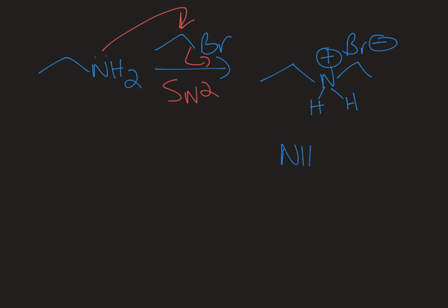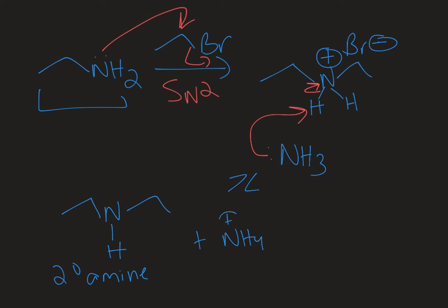Amines are good bases, so an ammonia that hasn't reacted yet, or maybe another equivalent of this ethylamine that's been generated, can come in and deprotonate the salt that I've made here, and that will generate my neutral secondary amine. And then also as a byproduct ammonium, in this case because I used ammonia as a base.